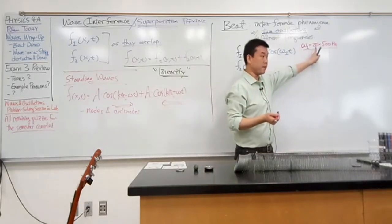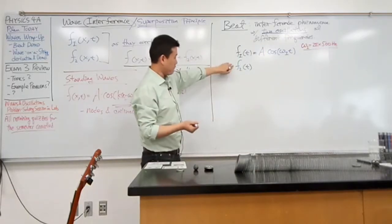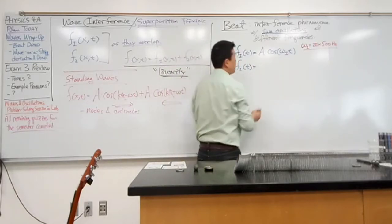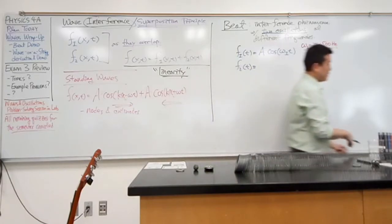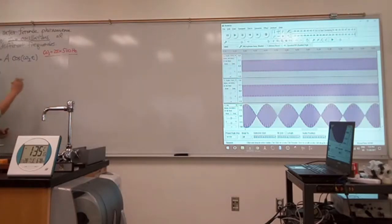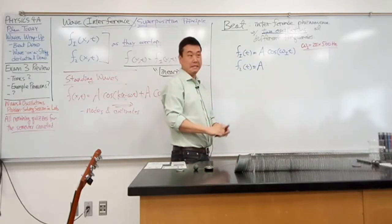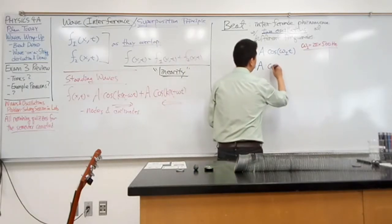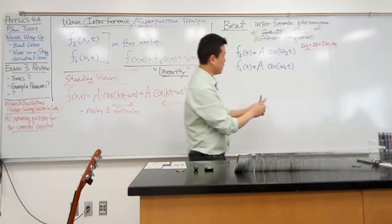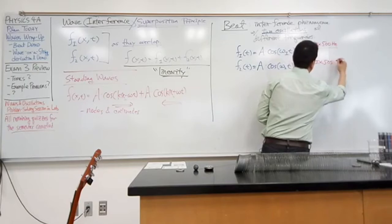Everyone understand why I have this 2π? Yes — angular frequency versus frequency. Wave oscillation 2 would be the exactly same functional form. For the perfect kind of wobbling and cancellation you see here, you want them to have the exact same amplitude. So: same amplitude times cosine of omega_2 * t. In the example you're looking at, omega_2 would be 2π times 505 Hz.